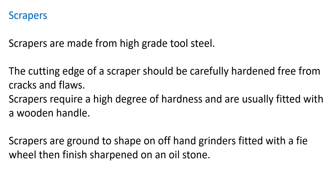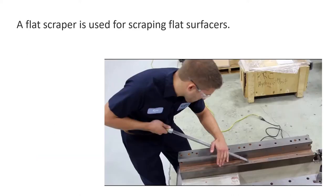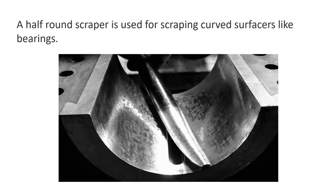Scrapers are made from high carbon steel or tool steel. Attention should be paid to hardness, over-tempering, and edges should be sharp and fault-free. Types of scrapers: first, the flat scraper — it looks like a chisel with a flared end, fitted with a wooden handle, and used for scraping flat surfaces. The half-round scraper has a curved and tapered end, also fitted with a wooden handle, and is used for scraping curved surfaces like bearings, bushings, or bearing journals.